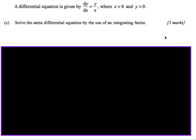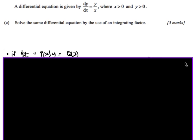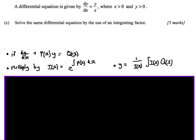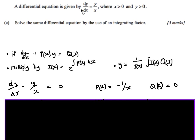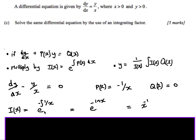The last method is using an integrating factor. I always write down the standard form at the start: dy/dx plus P(x) times y equals Q(x), with integrating factor e to the power of the integral of P(x). I need to rearrange my equation to look like this, giving dy/dx take away y over x equals 0. So P(x) is minus 1 over x, and Q(x) is just 0. The integrating factor is e to the minus integral of 1 over x.